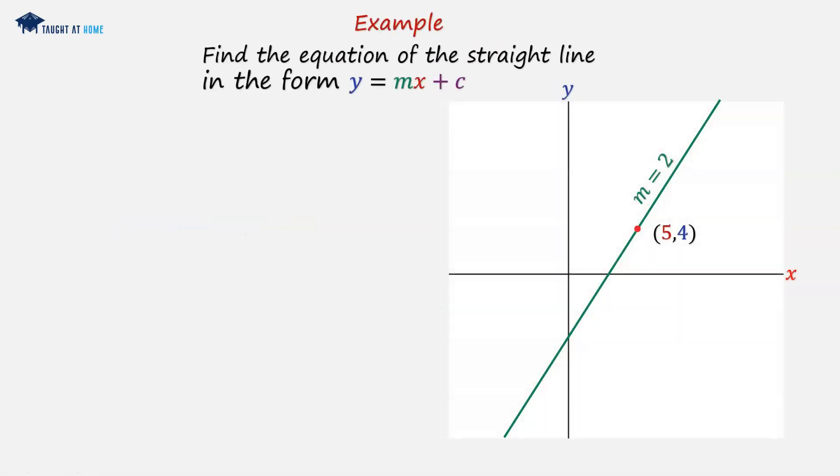So let's have a look at an example. Find the equation of the straight line in the form y equals mx plus c, and we are given a line with a point and an associated set of coordinates, and we're given the gradient.